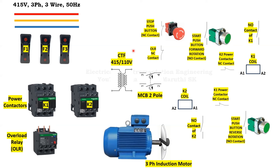Next we will add the control transformer elements — CTF, the control transformer, 415/110 volt AC. Then a 2-pole MCB, overload relay NC contact, stop push button NC contact, start push button for forward rotation NO contact, NO contact of K1 power contactor, K2 power contactor NC contact, and the K1 power contactor coil. Then K2 power contactor coil, K1 power contactor NC contact, NO contact of K2 power contactor, and start push button for reverse rotation. These are all the components required for the forward and reverse starter.